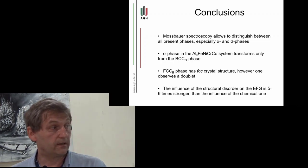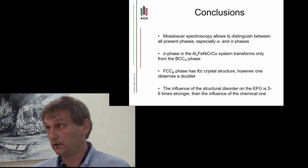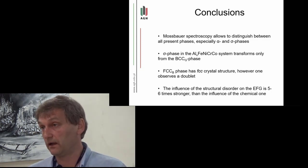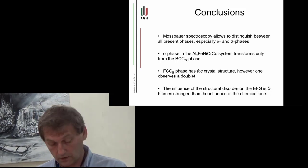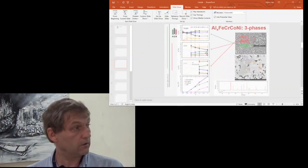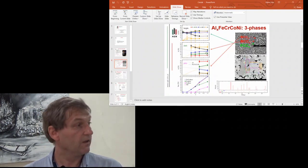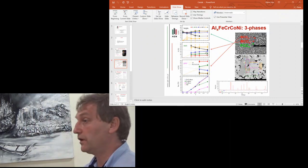FCC bright phase has pure FCC crystal structure; however, one observes a doublet. This fact should be explained via electronic structure calculations, and the influence of structural disorder on the electric field gradient is five to six times higher than the chemical one. Thank you for your attention.